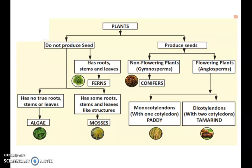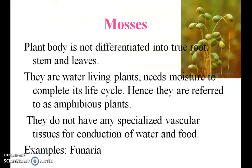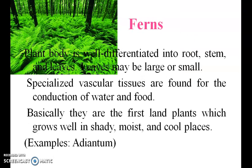These are the divisions. Non-seed producing and seed-producing groups. This plant body is not well differentiated into root, stem, and leaves. They are predominantly aquatic. They are unicellular or multicellular. They do not have any specialized vascular tissues for conduction of water and food. These are aquatic, water-living plants — algae.